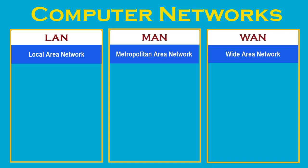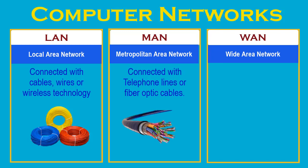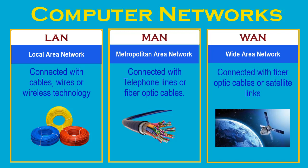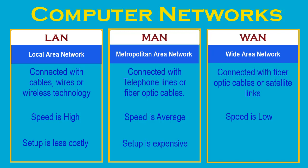LANs are typically connected with cables, wires or wireless technology. In MAN, various LANs are connected to each other through telephone lines or fiber optic cables. WAN connects different MANs by either fiber optic cables or satellite links. The transmission speed of LAN is high, while MAN is average and WAN is comparatively low. Setting up a LAN is less costly using cheaper hardware such as cables, hubs and routers. MAN is moderately more expensive as it requires additional hardware and security features. WANs are even more expensive, requiring satellite connections or huge fiber optic setups across oceans and countries.